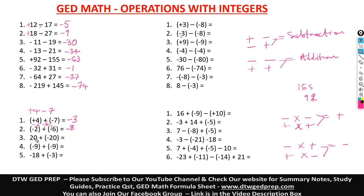Here we have 20 plus, in parentheses, negative 20. We multiply the signs: positive times negative gives negative. So we have 20 minus 20, which is 0.